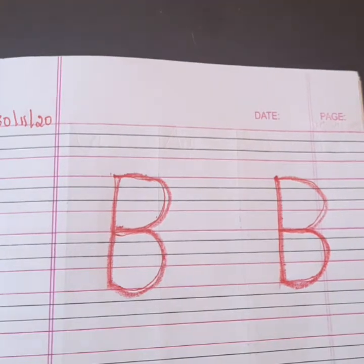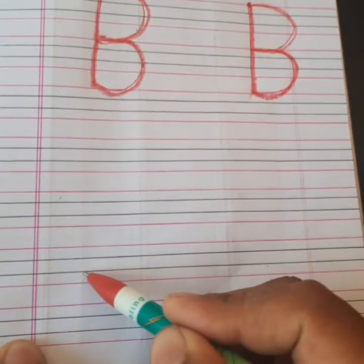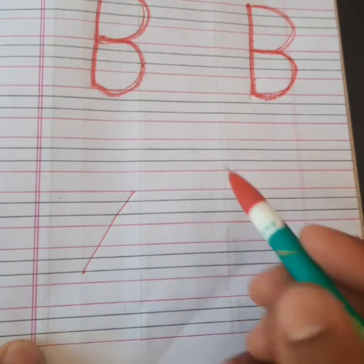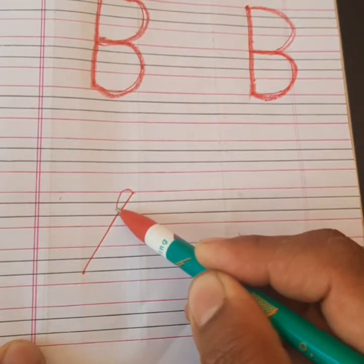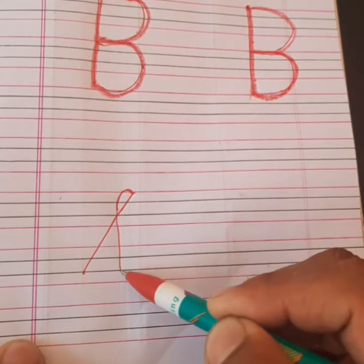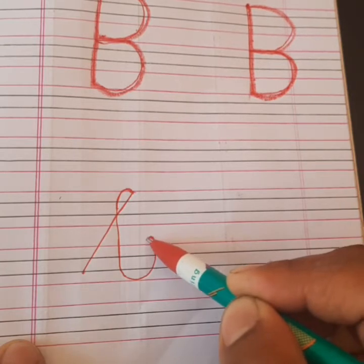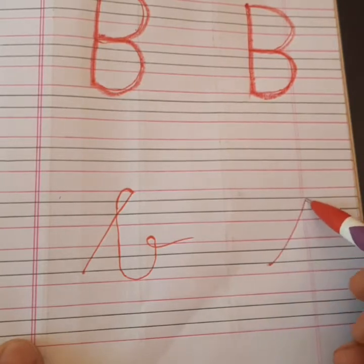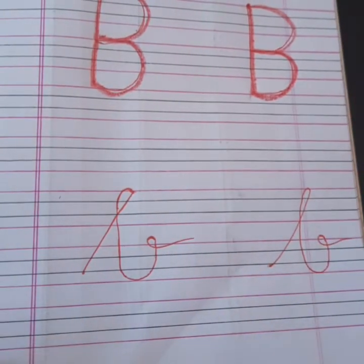Now we move to write the cursive letter B. Take a slant line like this. From down, go up and take a loop from inside — one curve. From here, come down — a little bit of a slant line. Again make a curve and one tail. This is B. Slant line, take a small curve, come down, again go up and a tail — this is B.